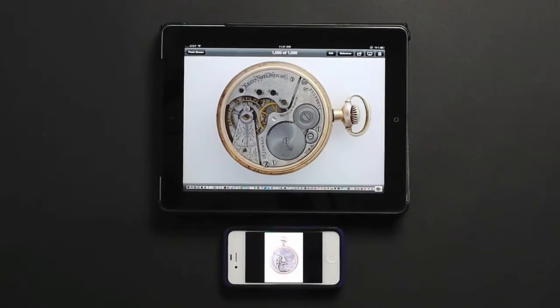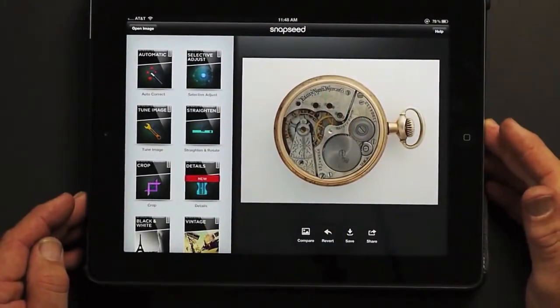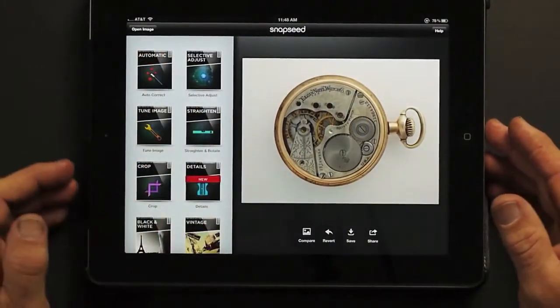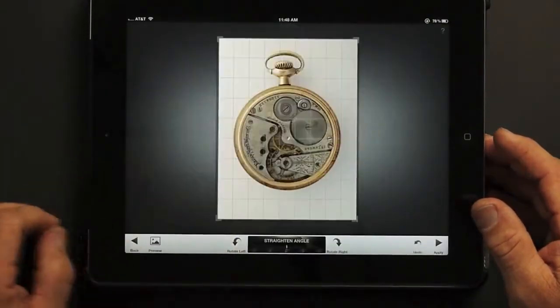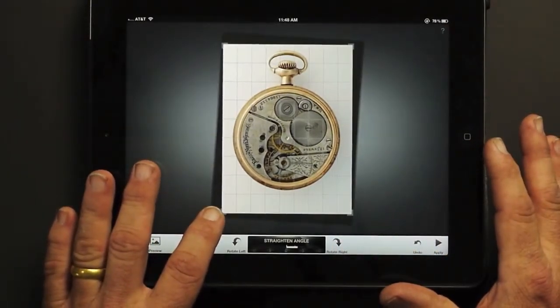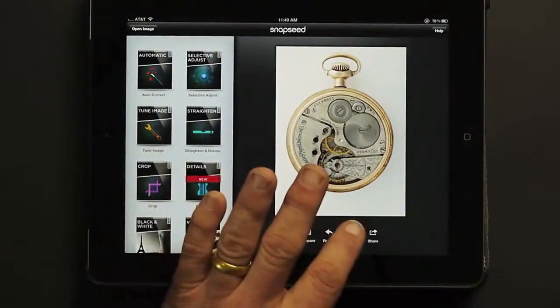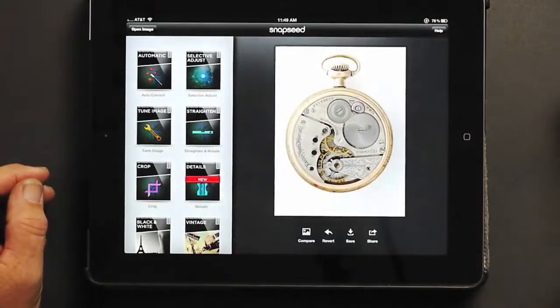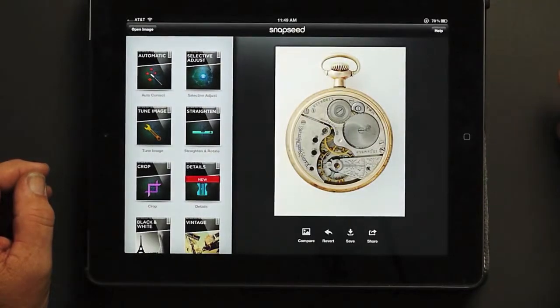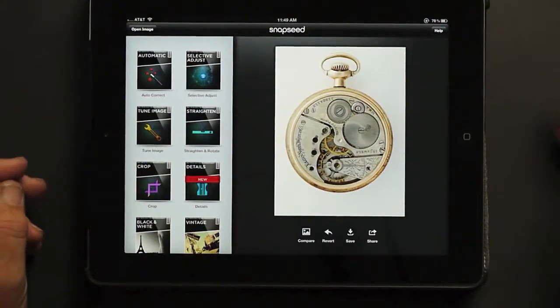Now I use a program called Snapseed. There are lots of editing programs for the iPad, but I find that Snapseed is really excellent and fun to use. I've opened the photo in Snapseed and first I'm going to rotate it so that I have a better look to it. I notice it's not quite straight, so I'm just going to rotate slightly until I get the right alignment. In just a matter of seconds, you've gone from taking the picture to having an absolutely excellent product photograph that you can use to email or even use in small print.